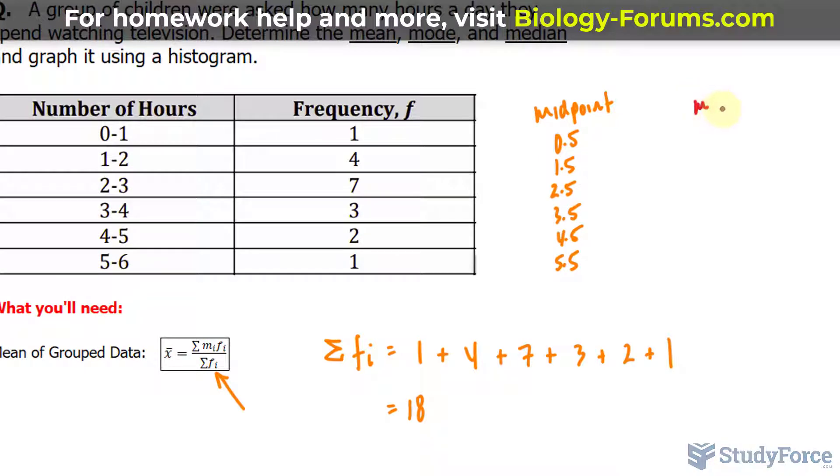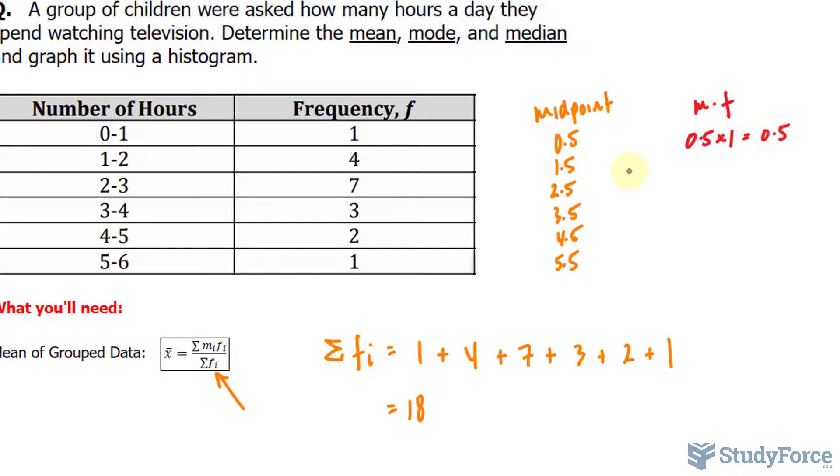We'll say midpoint times the frequency. So whatever that is, we multiply it by 1. 0.5 times 1 makes 0.5. 1.5 times 4 makes 6. And you continue to do that for each of these rows. If you add these up, you will end up with the numerator of this formula. So this part right there. The sum of m times f makes exactly 49.